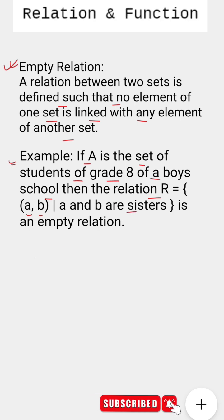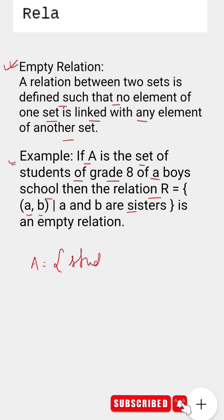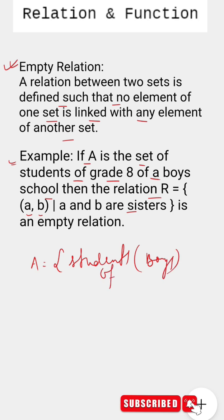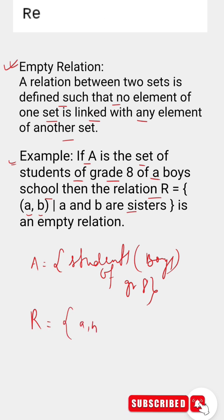When we have a set that is students, and it is mentioned that the students are boys of grade 8, we have to understand that the relation here which states the ordered pair (A, B) where A and B are supposed to be sisters is impossible in this case.